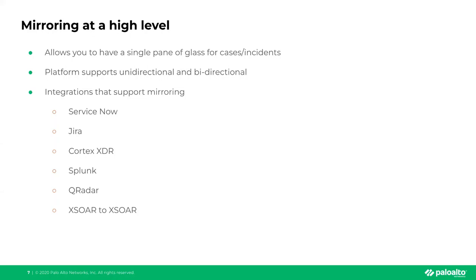With mirroring, we support unidirectional and bidirectional mirroring. If you have bidirectional with ServiceNow, you can create a ticket in ServiceNow and it will be created in XSOAR as an incident. You can update from either system and it will mirror back to the other. For example, most of the team might work from XSOAR updating information, and that information gets pushed to the ServiceNow ticket. Team members without XSOAR access can update in ServiceNow and those changes get kicked back to XSOAR as well.